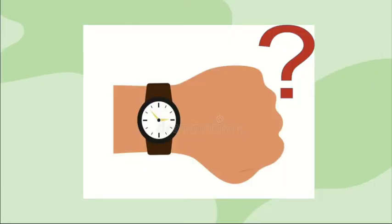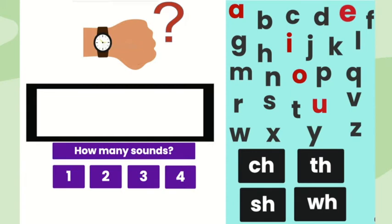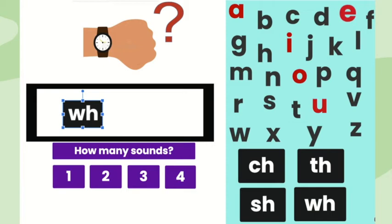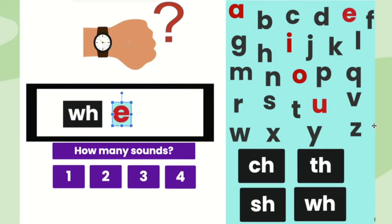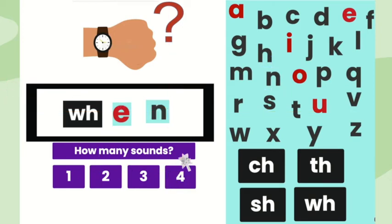Check out our next word, when — like when are we going to the store? Let's create the word when. The first sound in when is w, with the W-H spelling. The middle sound in when is eh, so I will use the letter E. The final sound in when is n, so I will need the letter N. There are three sounds in the word when.